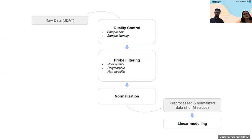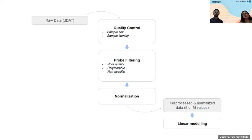In a nice flow chart: you start with raw data as idat files — for each sample you'll have two idat files, one measuring red fluorescence and one measuring green. You load those into R, then take them through sample quality control, probe filtering, and normalization, ending up with a preprocessed data object in the form of beta values or M values that you can take into the analysis section.